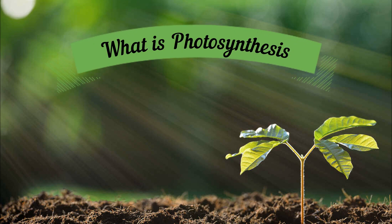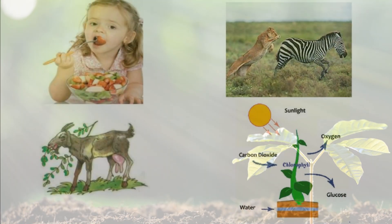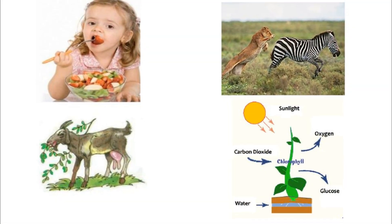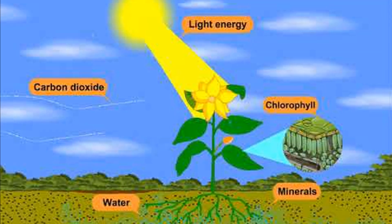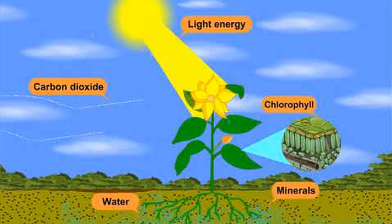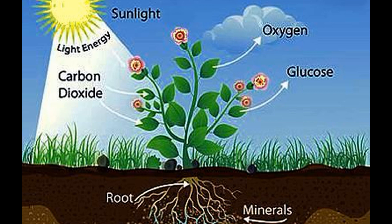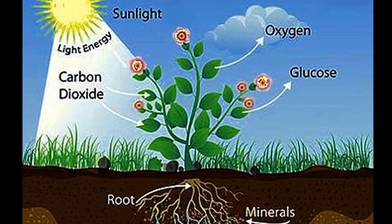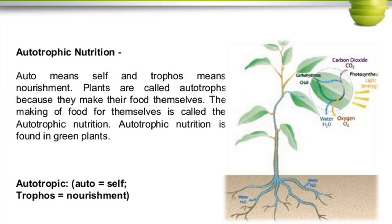What is photosynthesis? All organisms need food for growth and energy. Green plants can prepare their own food, hence they are called autotrophs. Auto means self and trophs means nourishment, and this type of nutrition is called autotrophic nutrition.